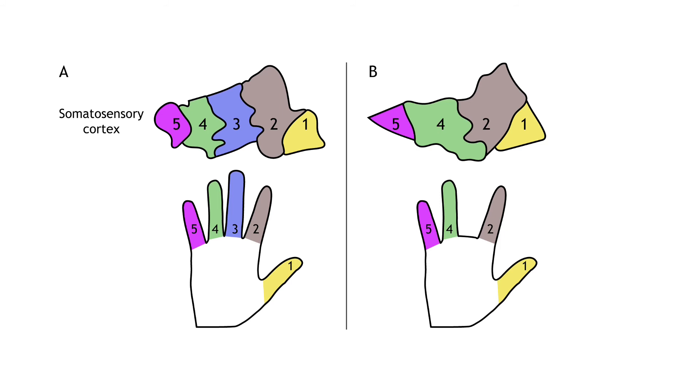In adulthood, the brain is plastic, meaning synaptic connections can rearrange under certain conditions. Amputation, or loss of a finger, for example, will lead to the associated cortical space to be functionally remapped by input from neighboring regions of the hand. The cortical neurons do not die. They begin to be activated by a different region of the body.